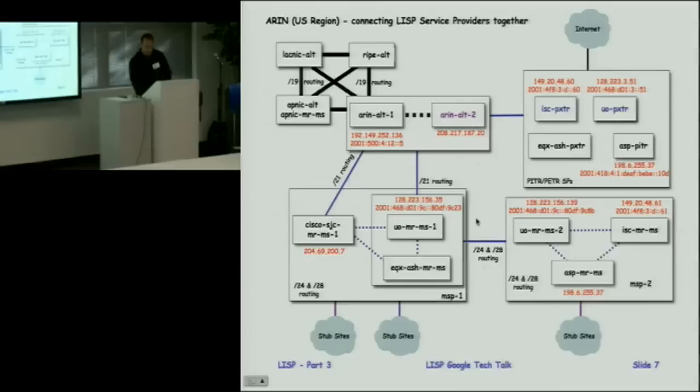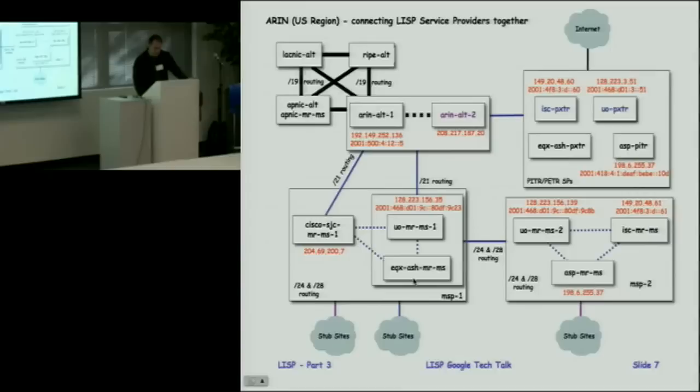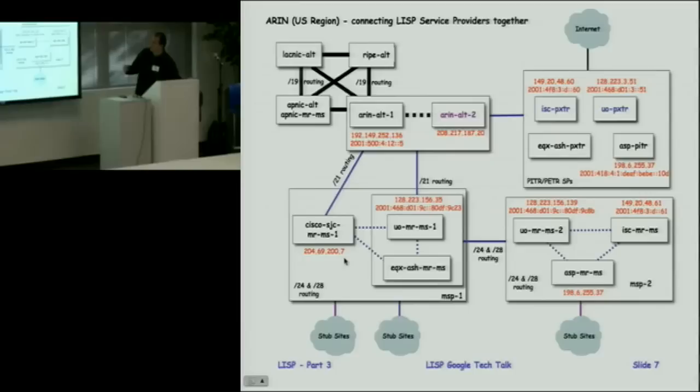The idea is that a stub site can switch service providers — going from MSP1 to MSP2 — while northbound aggregation stays the same. This could be a VeriSign, Equinix, Google, MSN, ISC, or DIN DNS providing these mapping services as a third party. A service provider could also package mapping services with their link sales — if you buy bandwidth from them, you can get mapping services included.